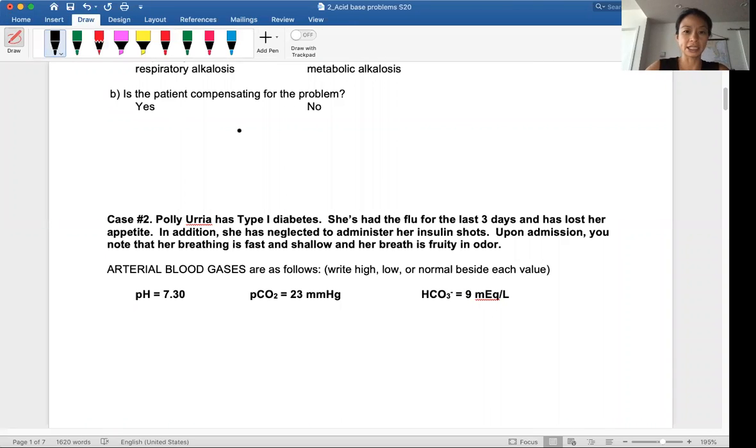To start off, remember we have to look at what is normal. The normal pH is 7.35 to 7.45. I'm going over this again just in case you guys choose to watch one method and not the other, so I want to start from the beginning for both methods.